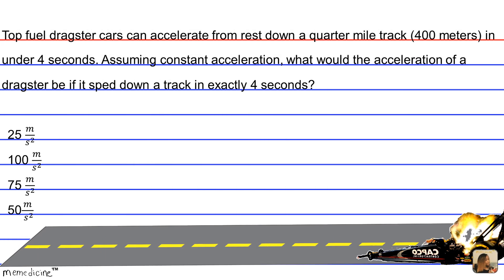So basically we're given displacement. We're told that the track is 400 meters long, and we're also given time because we're hypothetically assuming the dragster car speeds down the track in four seconds. So we also know our initial velocity. If the object isn't in motion, the initial velocity is usually zero.